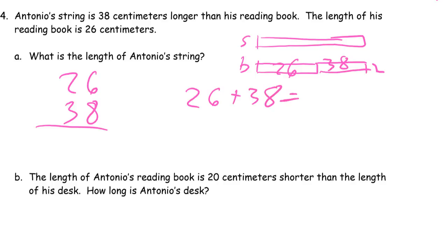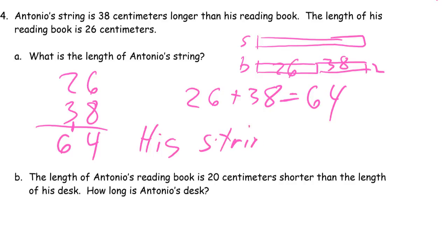Six plus eight is fourteen — that's four ones with a ten and a four. Then look at our tens digits; add those together, and we have another ten here, so that's sixty-four. His string is sixty-four centimeters long.